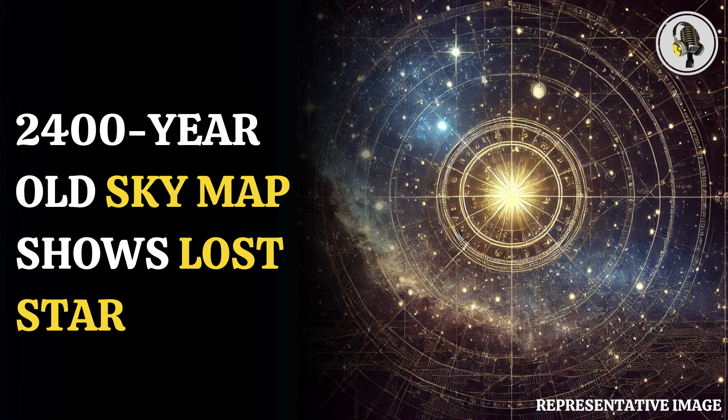However, historians don't accurately know how Hipparchus measured the stars. According to National Geographic, they assume he may have used an armillary sphere, a mechanical device with rotating rings depicting the various parts of the celestial sphere.